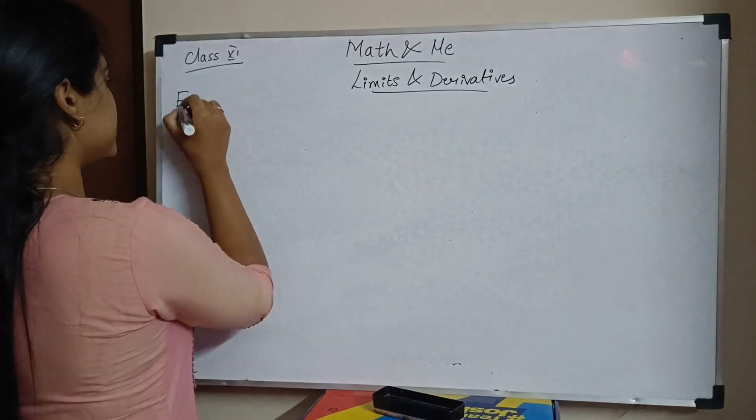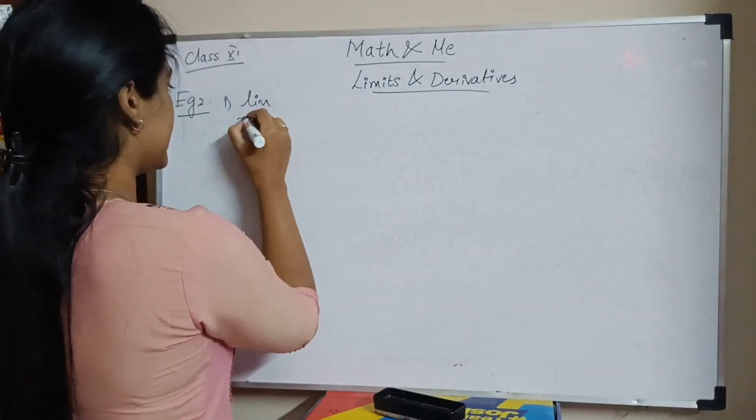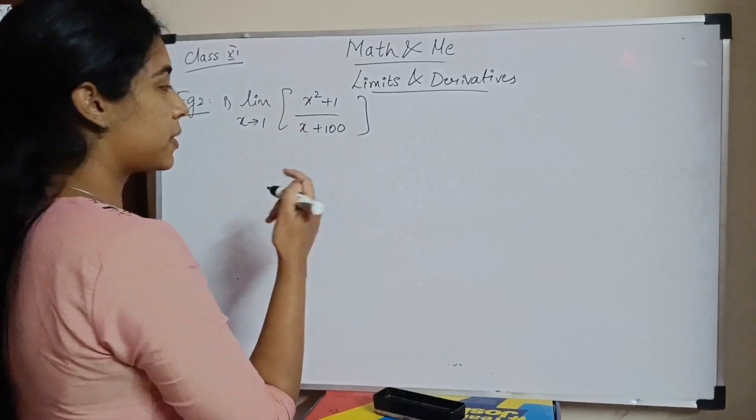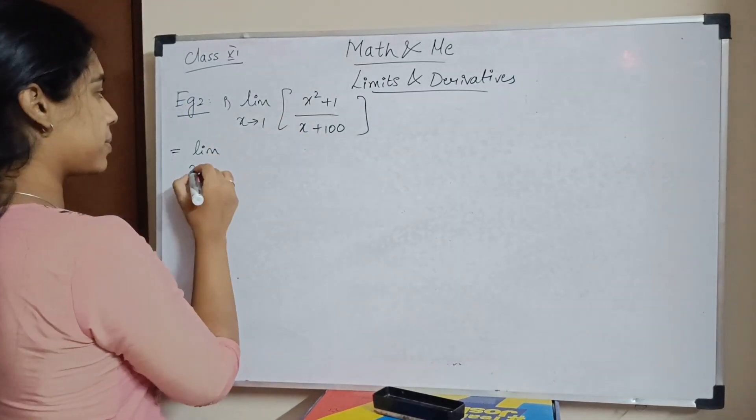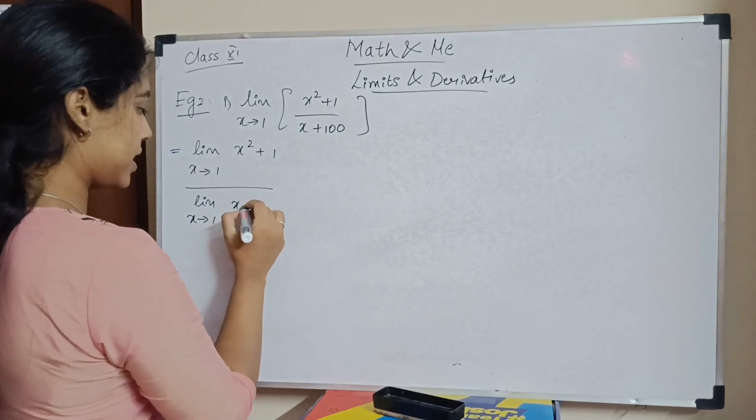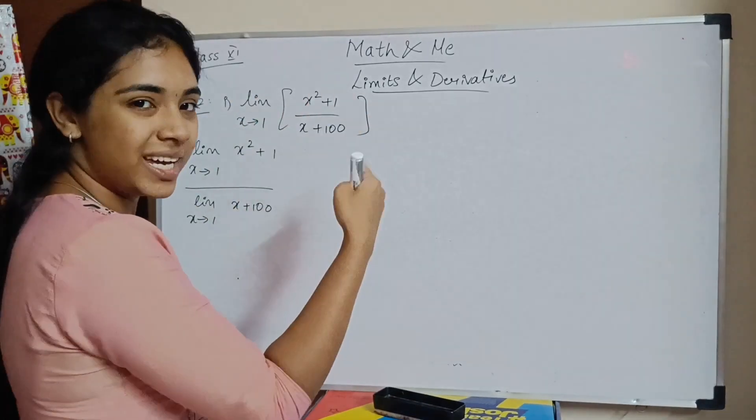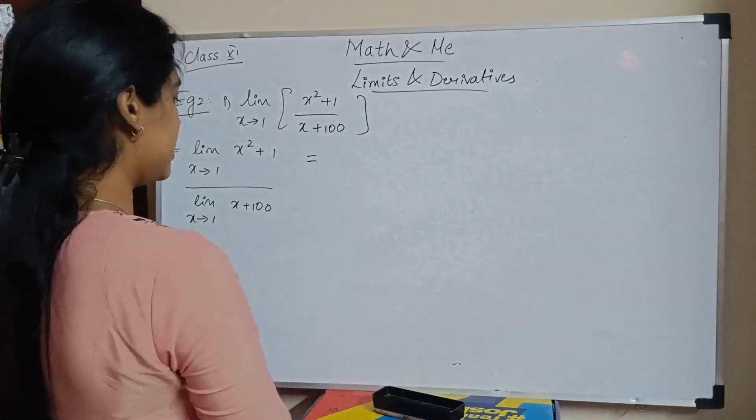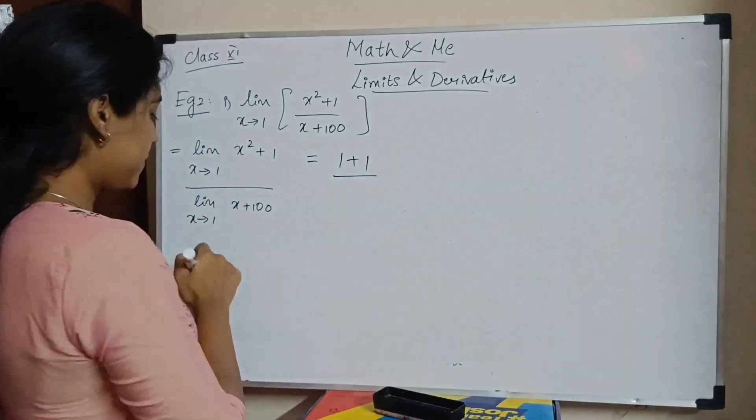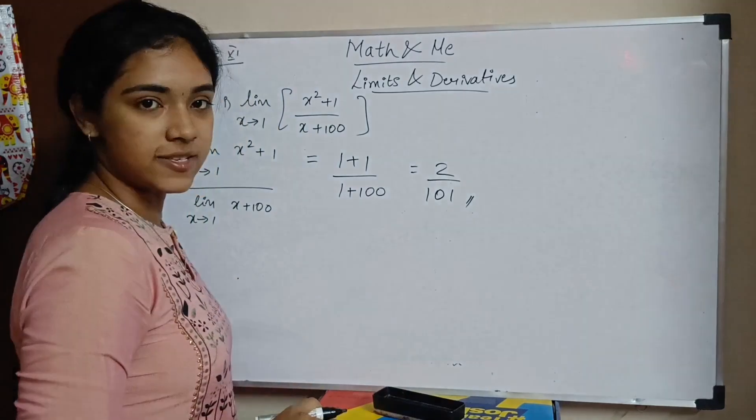Moving on to example 2, first subsection. Limit x tends to 1 of x square plus 1 divided by x plus 100. What do we do? Split the limit. Numerator and denominator, split it. Limit x tends to 1 x square plus 1 divided by limit x tends to 1 x plus 100. Substitute 1: 1 square plus 1, 1 plus 1, so 2. And 1 plus 100. What will it be? 2 by 101. That is your answer.